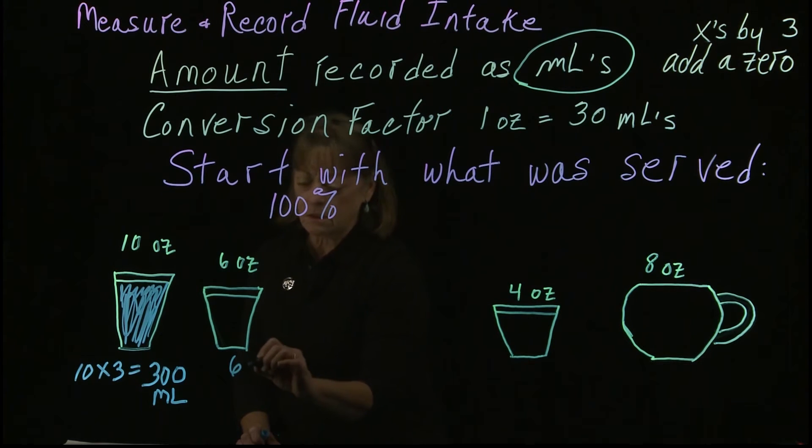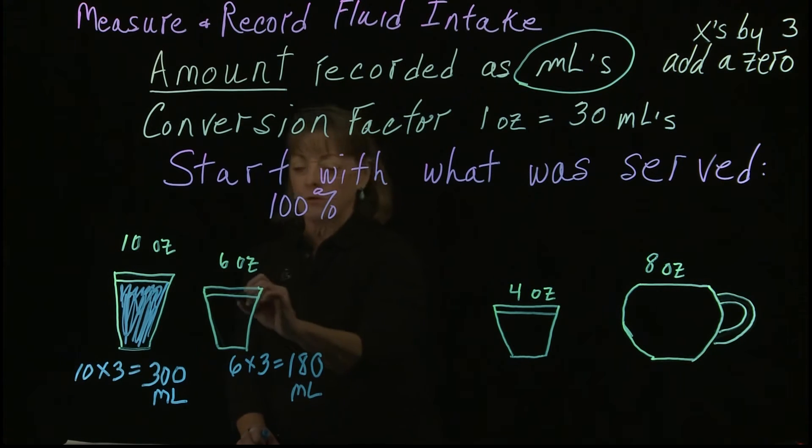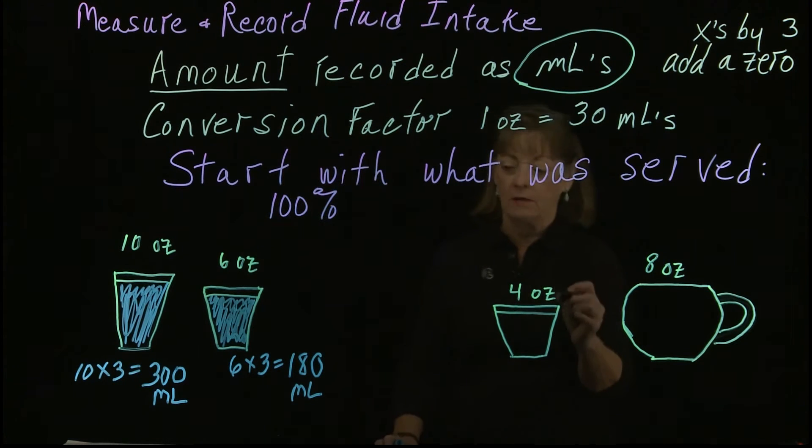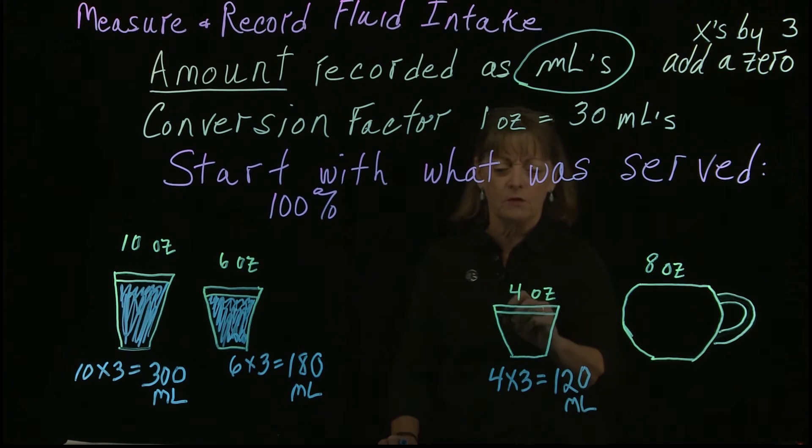So let's do 6 ounces. Here we have 6 times 3 equals 18, add a 0, and that gives us 180 mL. So that's a full 6 ounce serving, 180 mL. Now 4 ounces, I think you're getting the drift of this. So you have 4 times 3 equals 12, and add a 0. So that's 120 mL, and you will get very used to this. Once you've done this a few times, this will become very automatic to you.